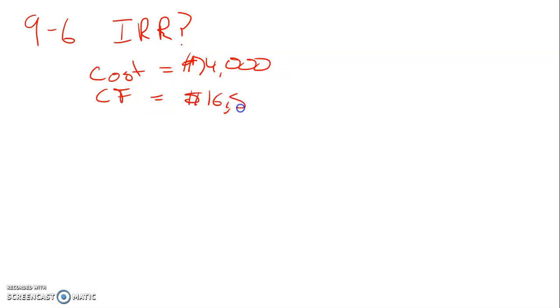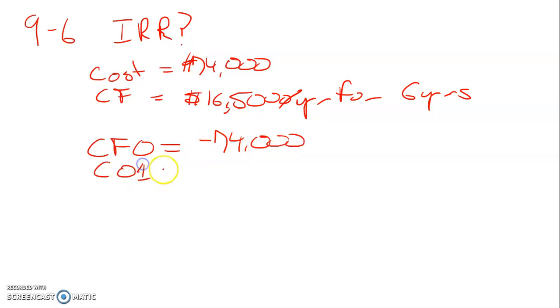To calculate this, enter the values: CF0 is negative $74,000, C01 is $16,500, and F01 is 6.